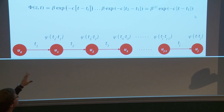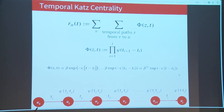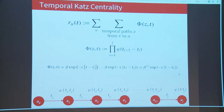To summarize: temporal Katz centrality is the weighted sum of all temporal paths flowing to a single specific node u up to some point in time. The weighting is defined as a product of weights over adjacent edge pairs. When applying exponential weighting specifically, we get a very nice closed-form formula for the weight of each walk.